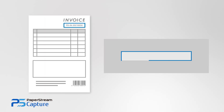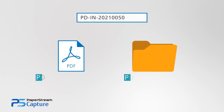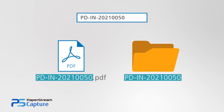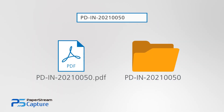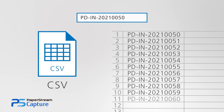Zone OCR detects text that is printed in designated areas of documents and utilizes the extracted line of text to automatically name folders and files, or export files in CSV.